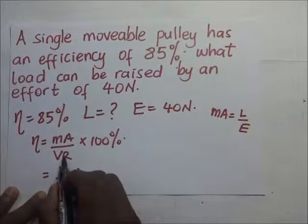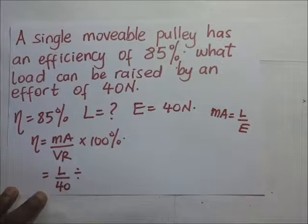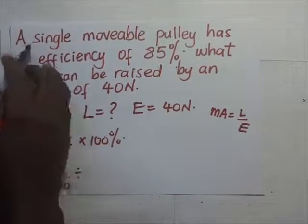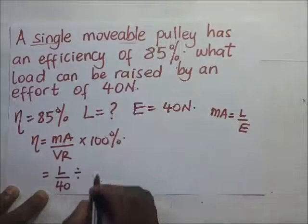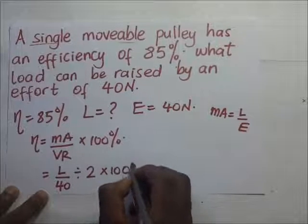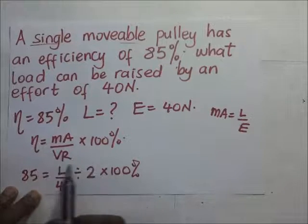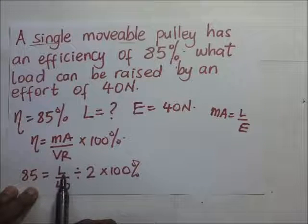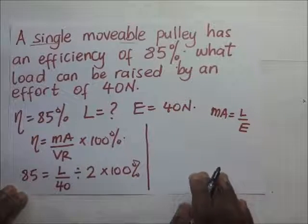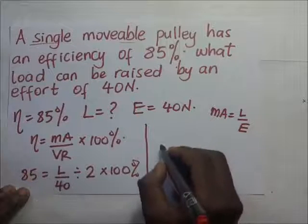Then divide that by velocity ratio. Now we know that the velocity ratio of a single movable pulley is 2 by default, because the effort moves twice the distance moved by the load for a single movable pulley. So it's going to be divided by velocity ratio, which is 2, multiply that by 100%, is going to be equal to 85. So we make L the subject of the formula, and we are able to get the load.